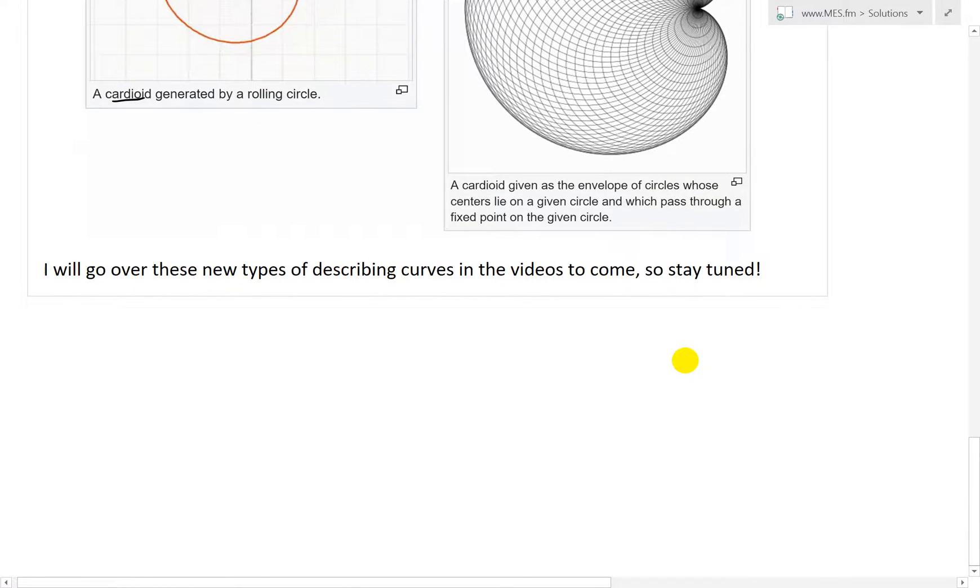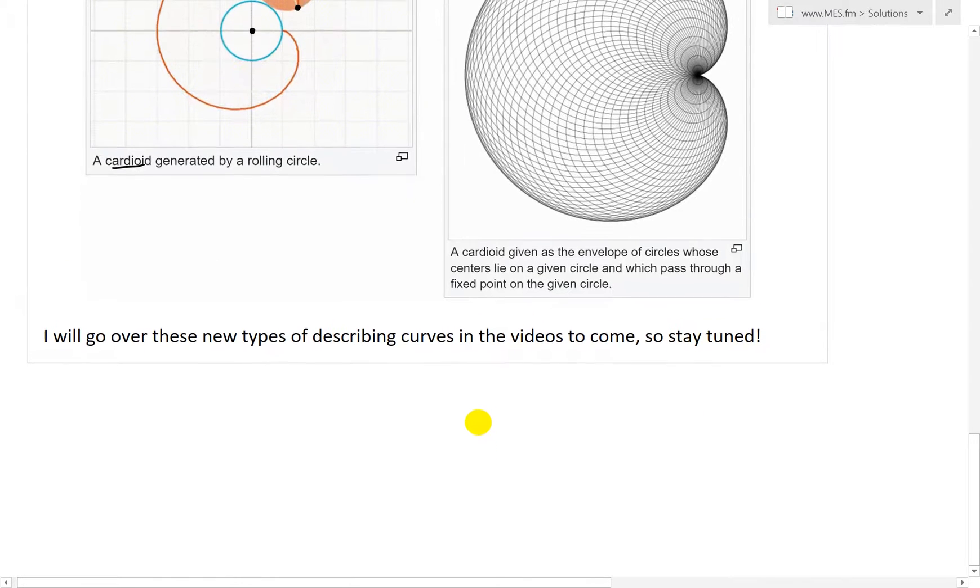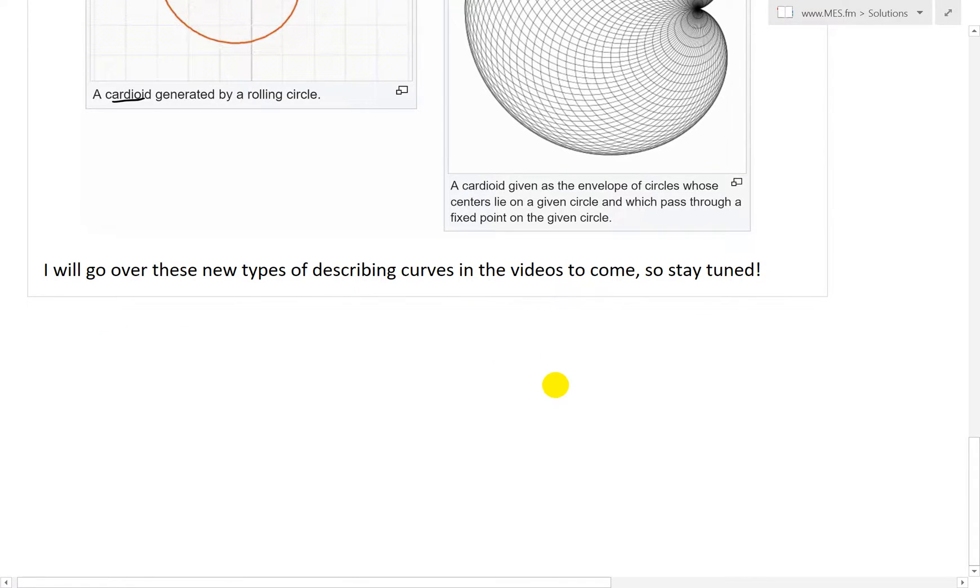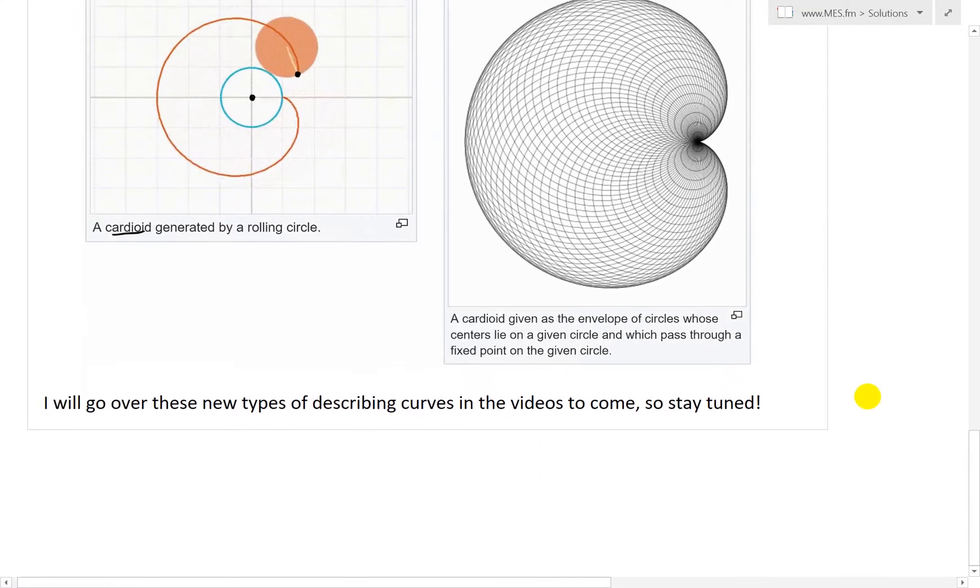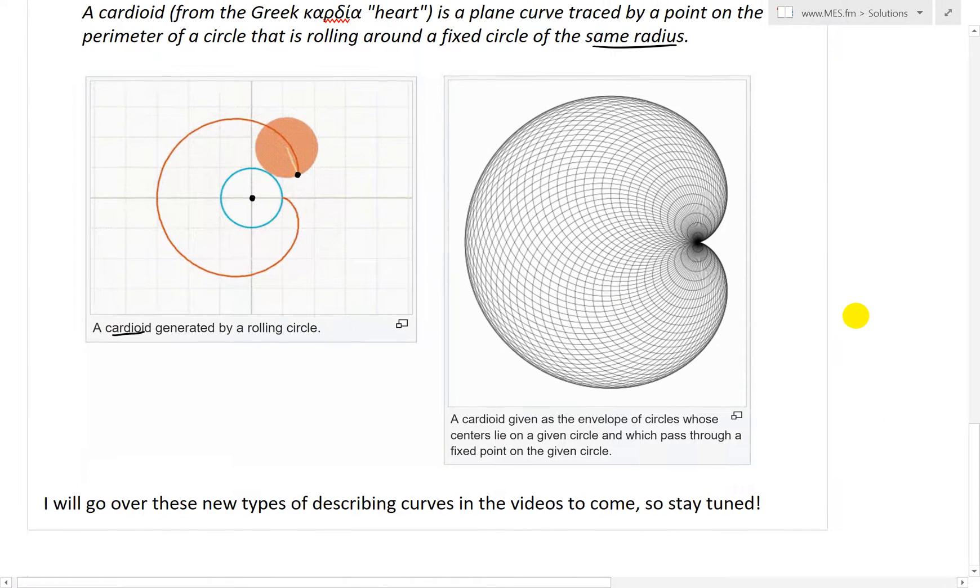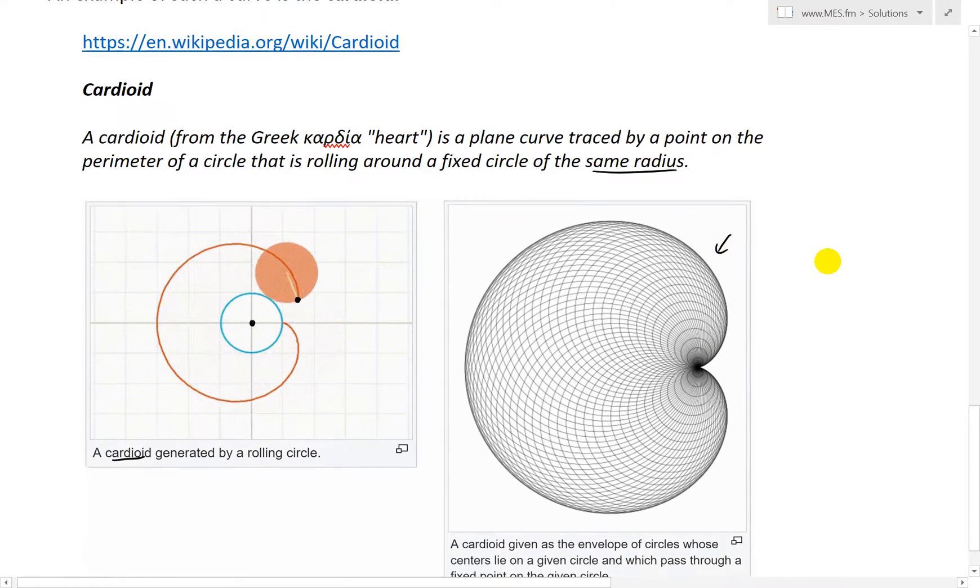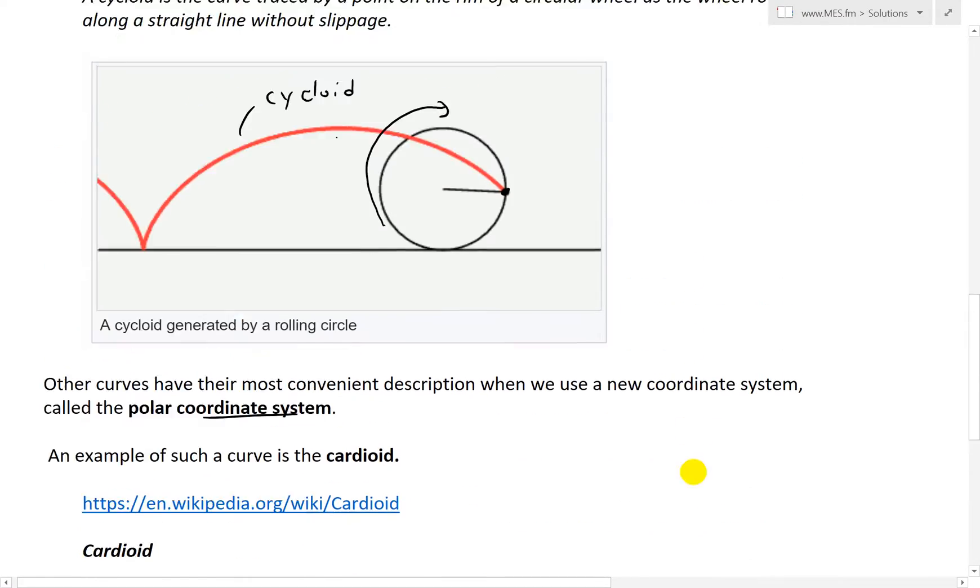So these are examples and we'll go over a lot of this in detail. This is one of the most interesting topics that I've found in mathematics, so stay tuned for those. So again, I will go over these types of describing curves in the videos to come, so stay tuned. And especially the polar coordinate system, you can graph some very, very amazing kinds of curves using these equations, such as this one, which is quite ridiculous.